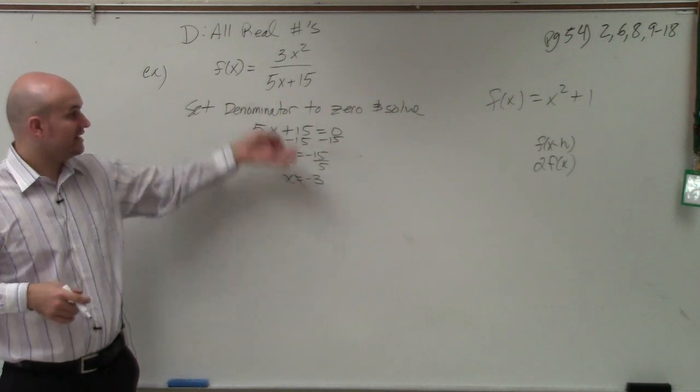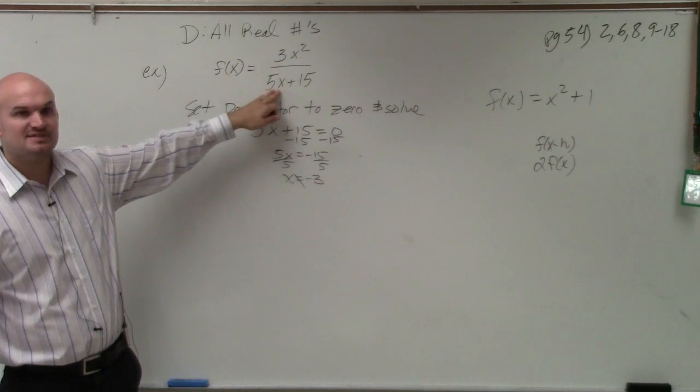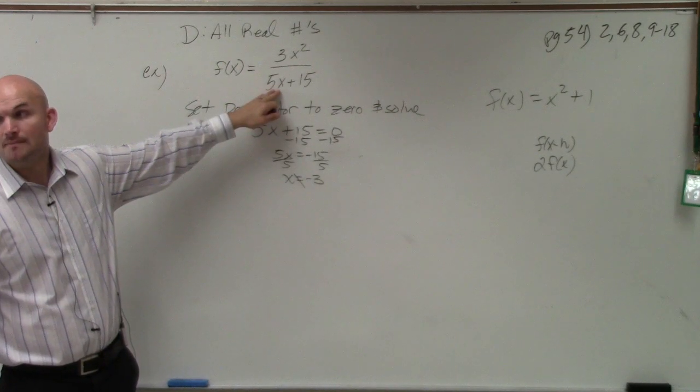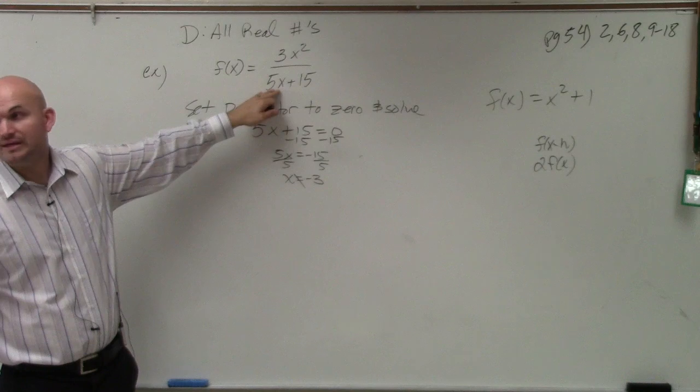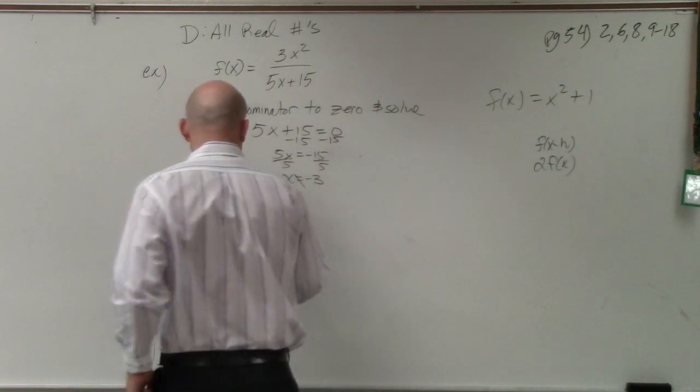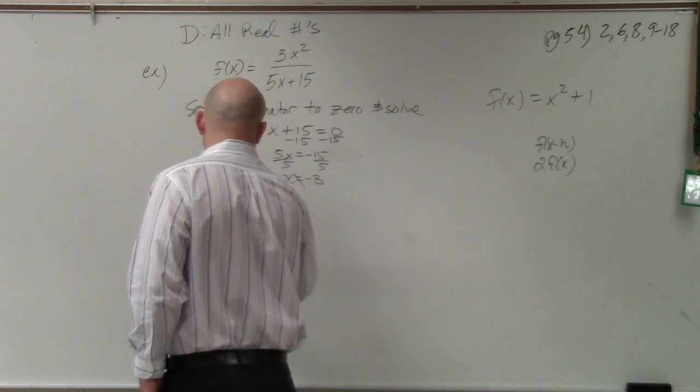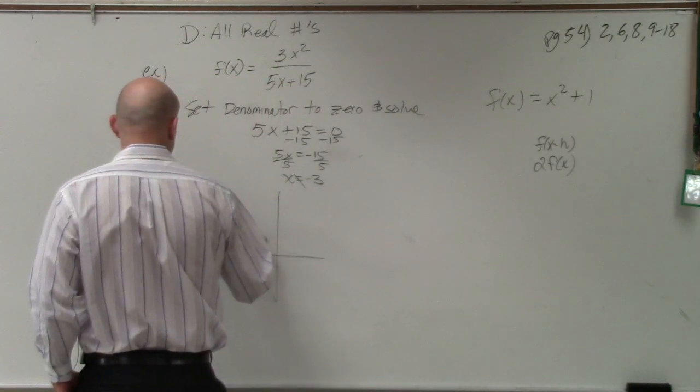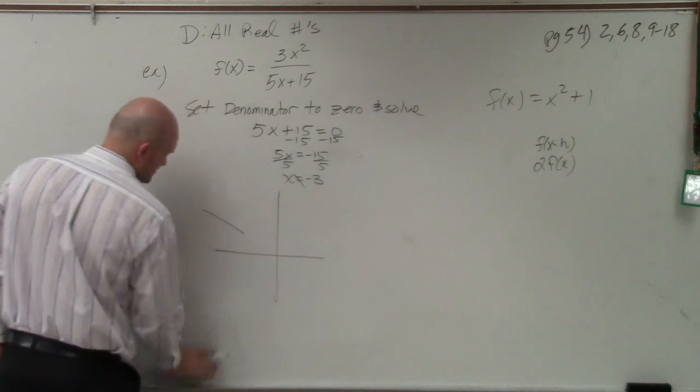Because if x equals negative three, my denominator becomes zero. It would be undefined, right? Because you can't divide by zero. So originally, the graph - actually I'm not even going to go to the graphing route.